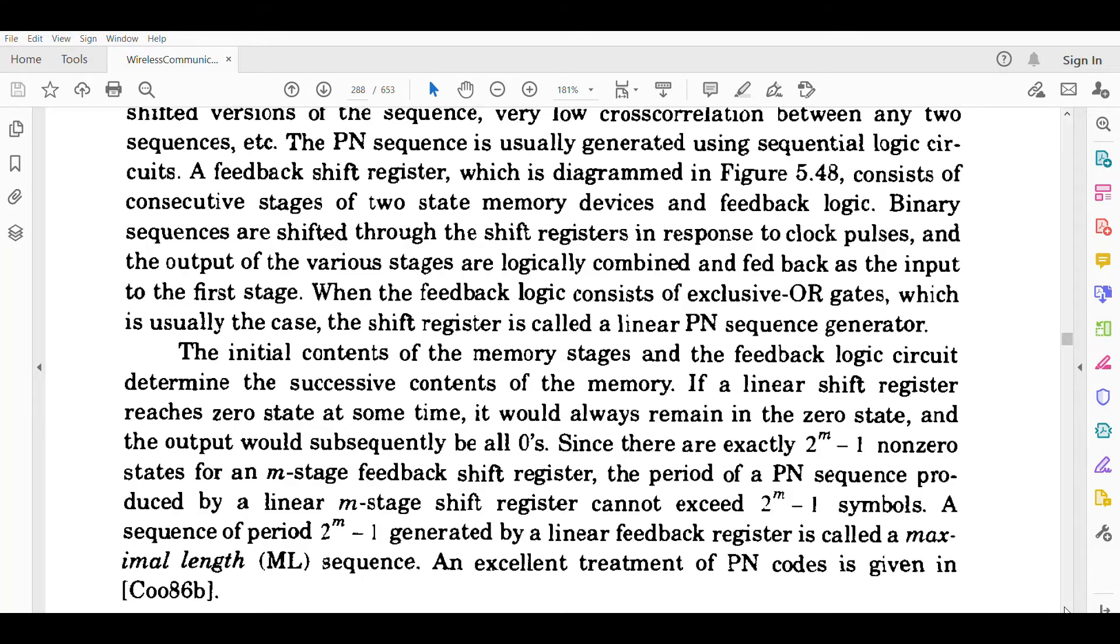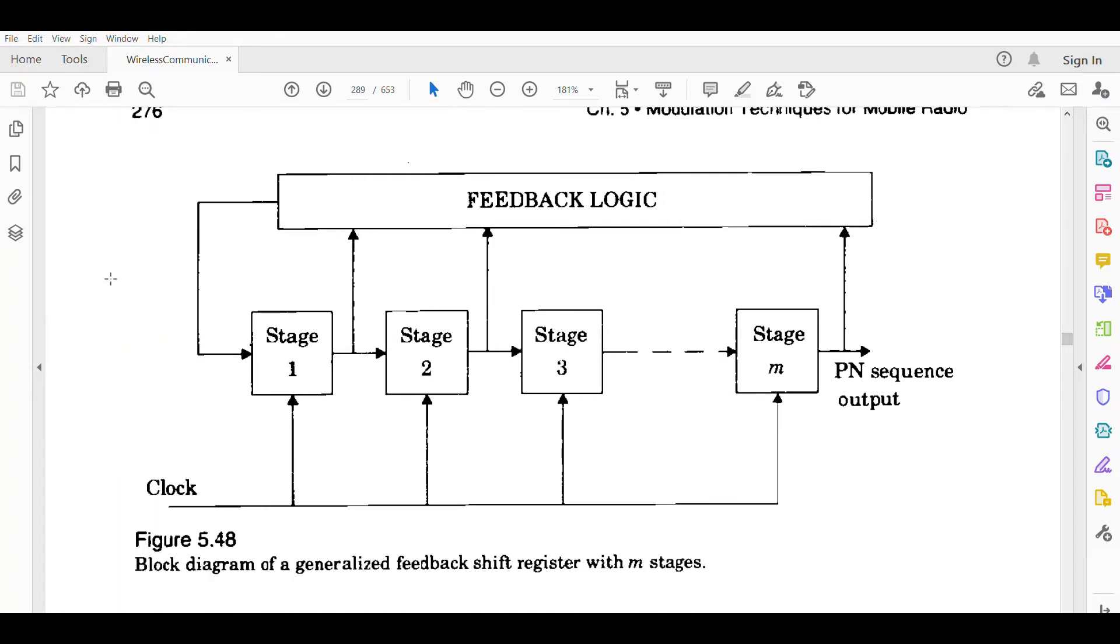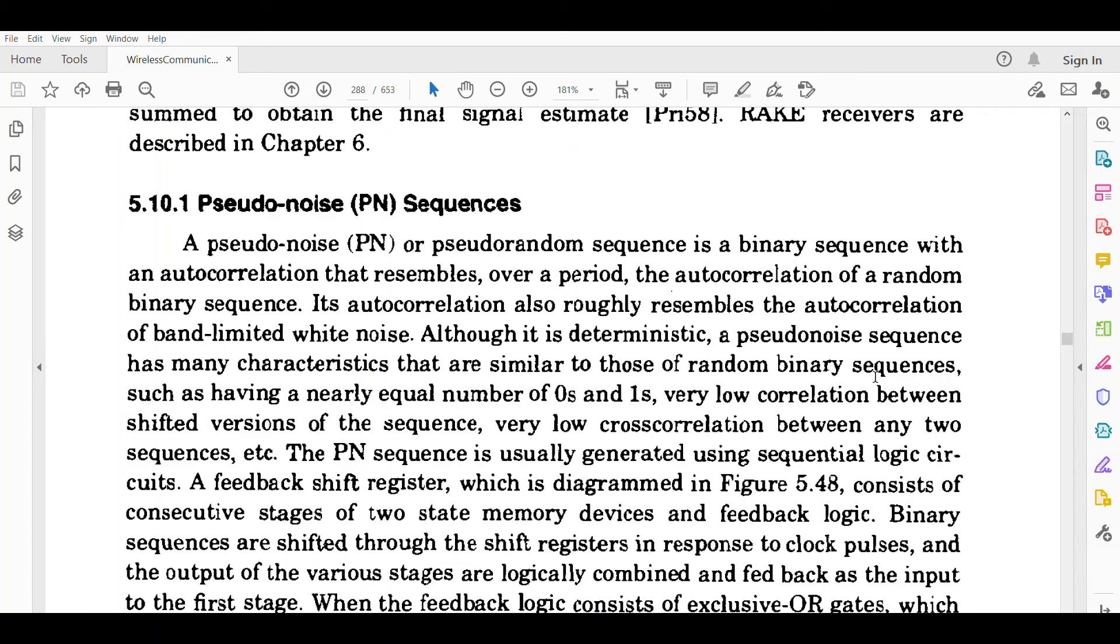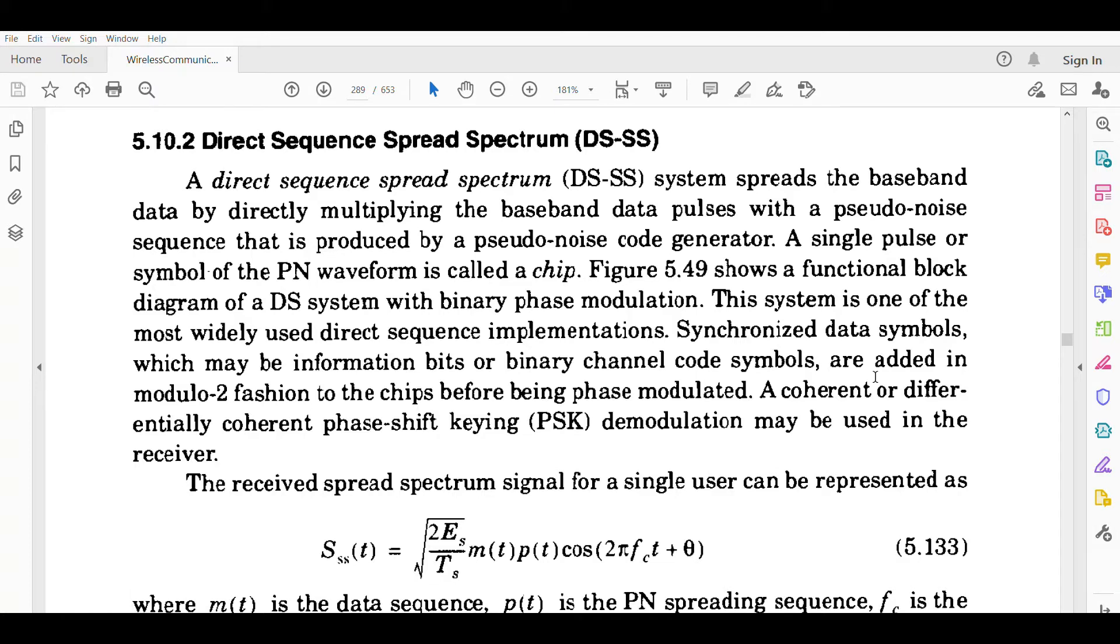A sequence of period 2 to the power m minus 1 generated by a linear feedback shift register is called the maximum length sequence. An excellent treatment is given in the reference paper.